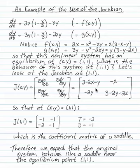By differentiating with respect to x and y respectively, give this matrix: 2 minus 2x minus y, negative x, negative 2y, and 3 minus 2y minus 2x.